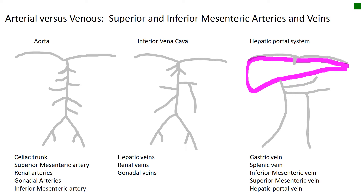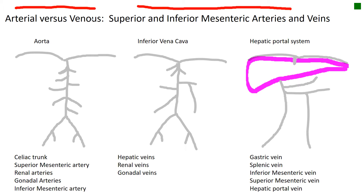This is Brother Barnes thinking about superior and inferior mesenteric arteries and veins, arterial versus venous. Trying to think like a teacher thinks so that we can be better test takers.